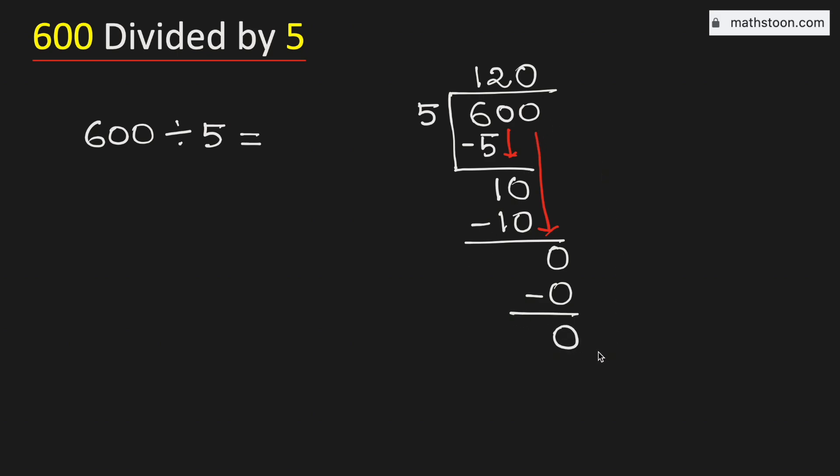As we have no number to bring down here and have got the number 0, so we will stop. Therefore, 600 divided by 5 is equal to 120. And this is our final answer.